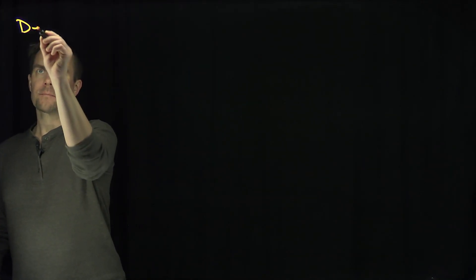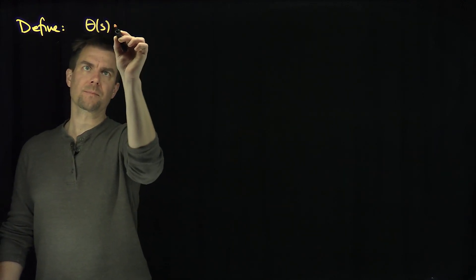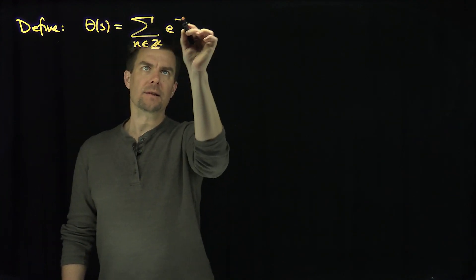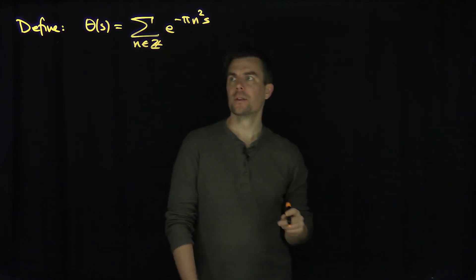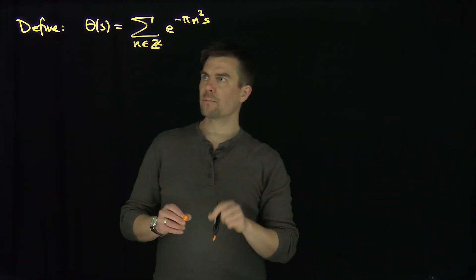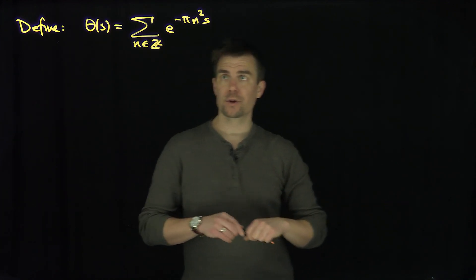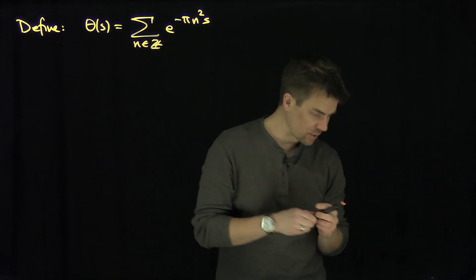Hello students. In this video we'll introduce two very important functions in number theory. We're going to define theta of s to be the sum over n in Z of e to the negative pi n squared s. This is a simple example of a theta function. Now why is this function important? We'll come to that in just a moment. But one thing I want to do is derive a functional identity for this theta function, because I know properties of the Fourier transform of such terms.